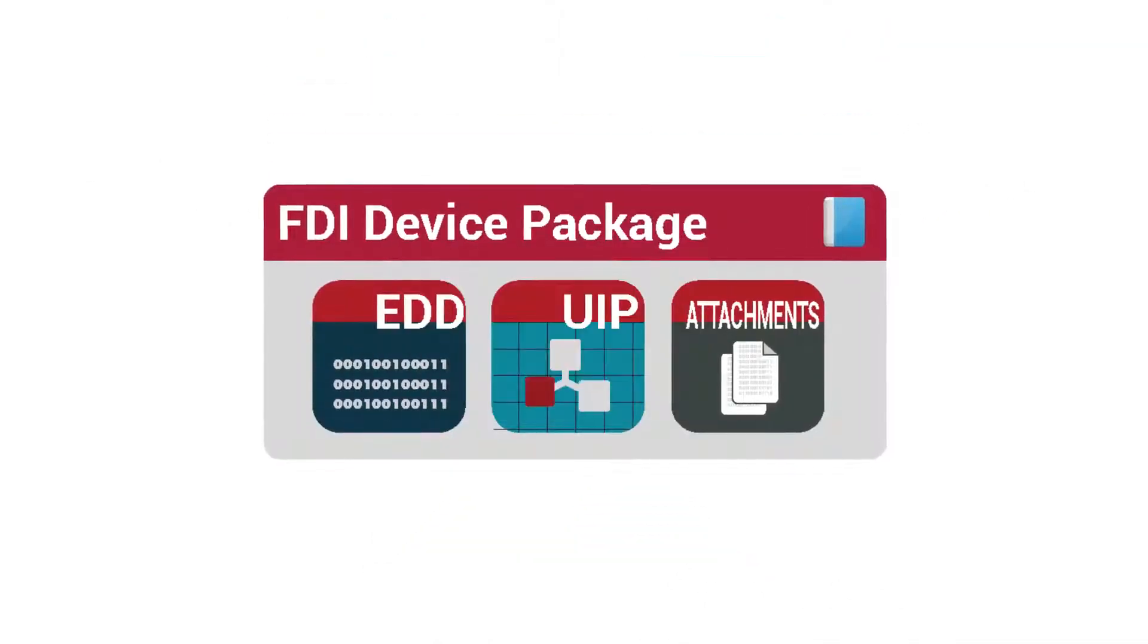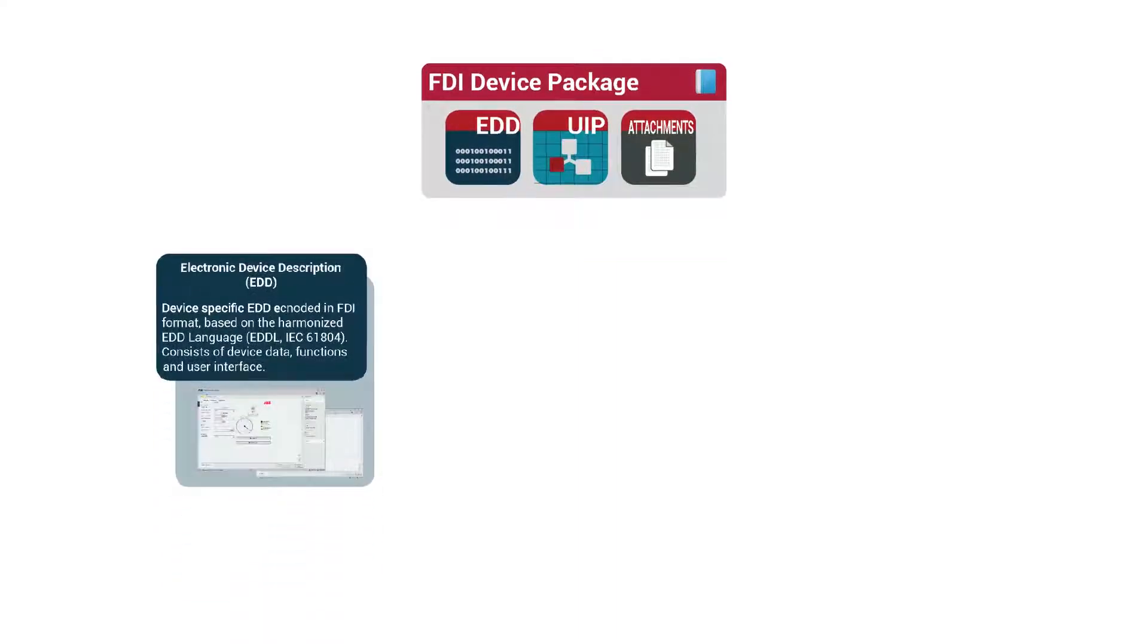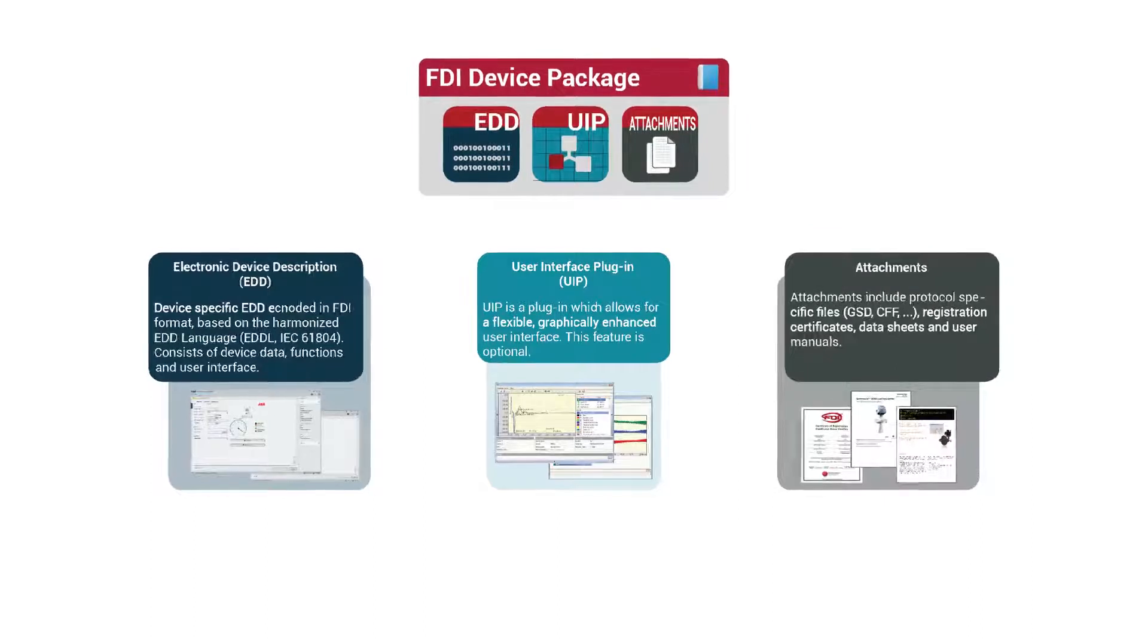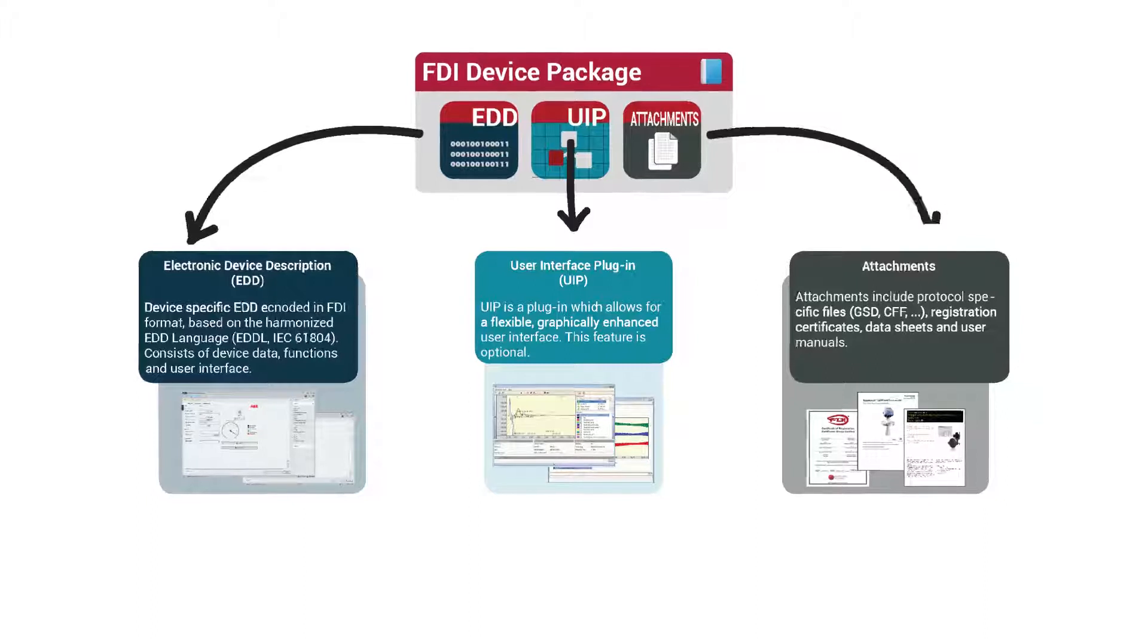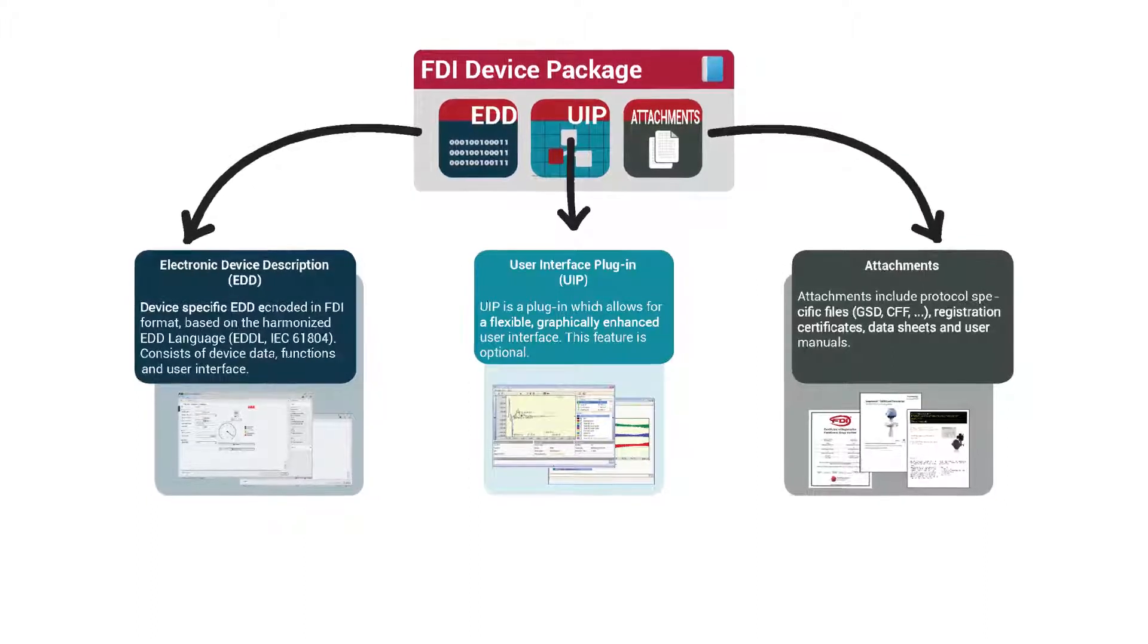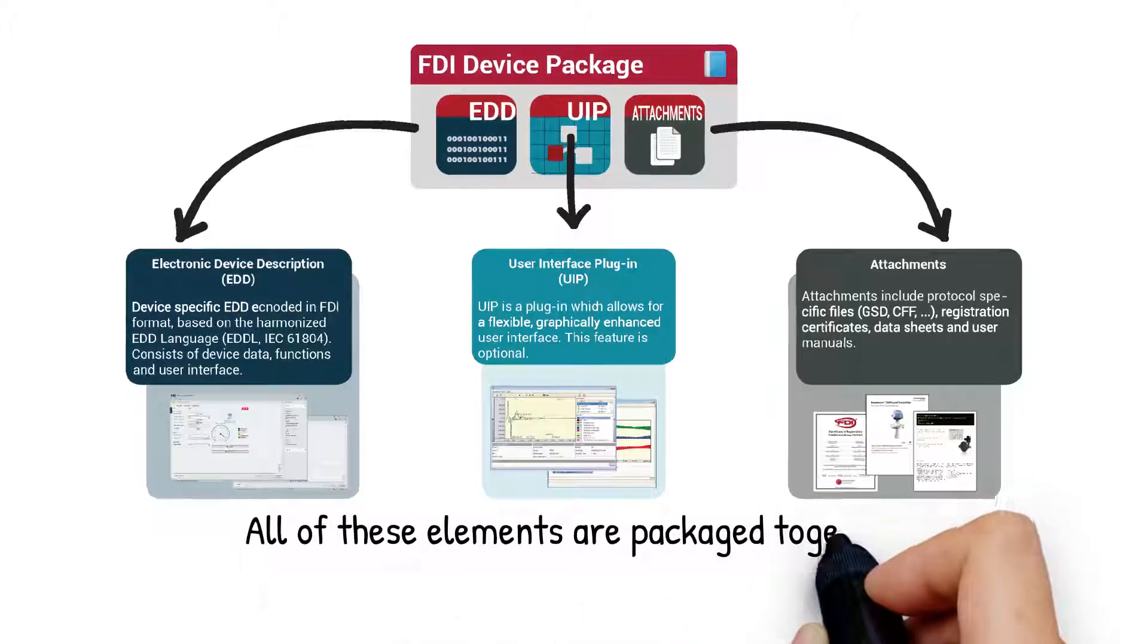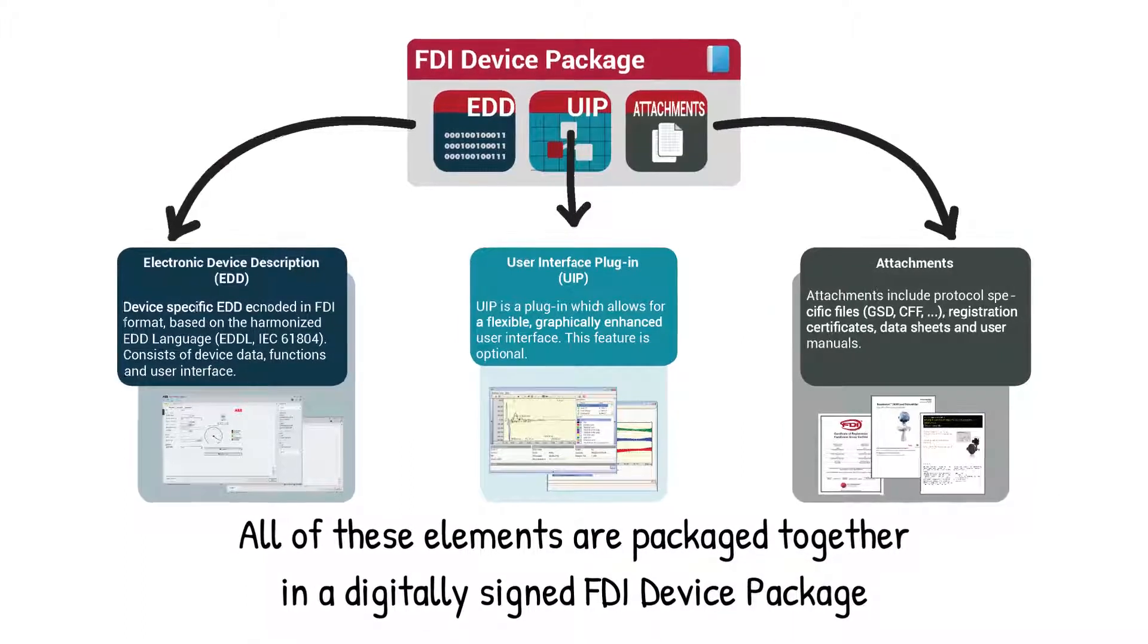The FDI device package is a standardized container of all files necessary to describe a field device to a system and a person, including the device description, user interface, and device documents such as wiring diagrams, manuals, and certificates. All of these elements are packaged together in a digitally signed FDI device package.